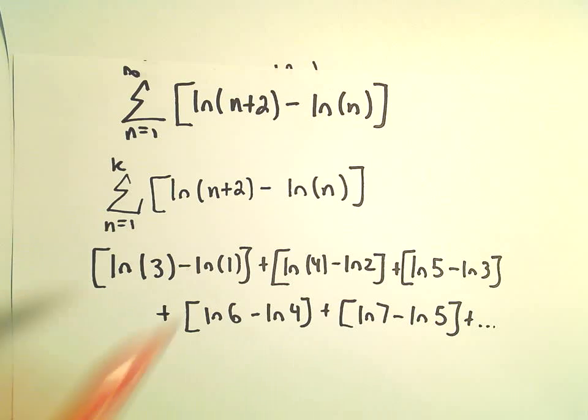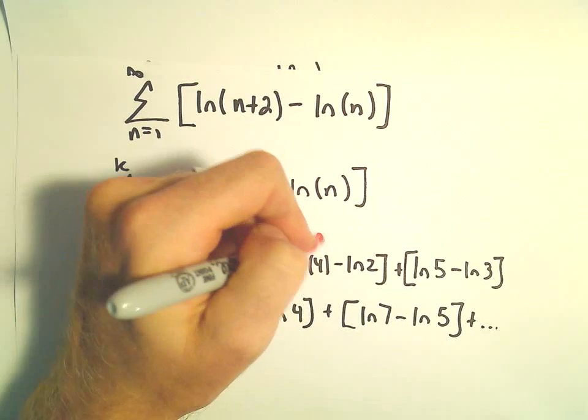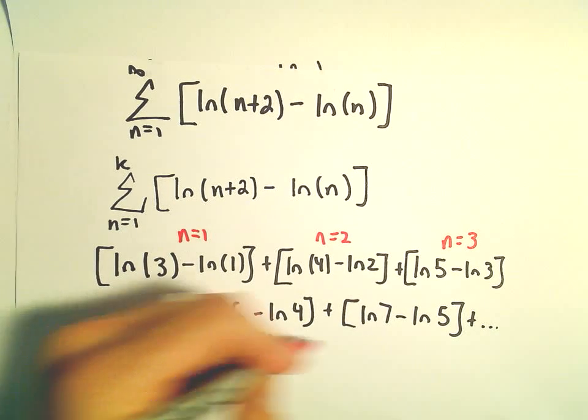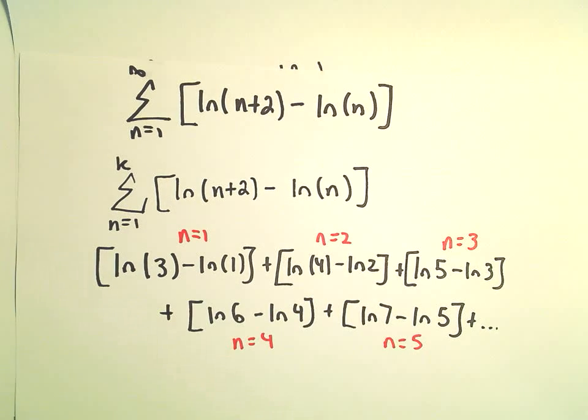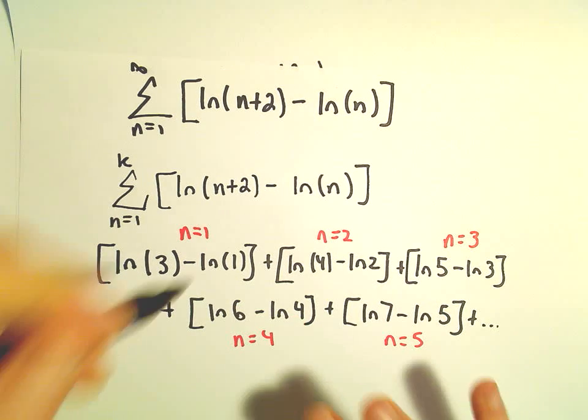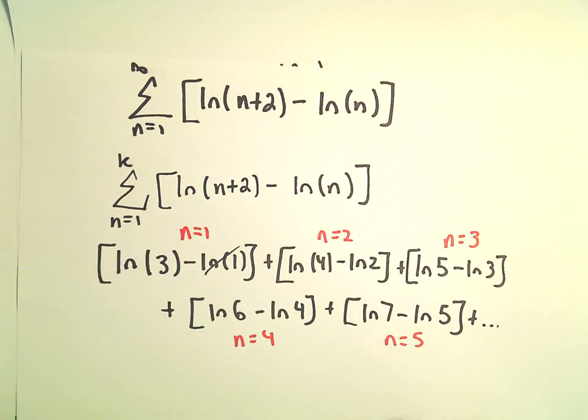So again, notice this is our n equals 1 term, n equals 2, n equals 3, n equals 4, n equals 5, etc. Let's suppose we summed up the first three terms. ln of 1 is just 0, so we can forget about that.